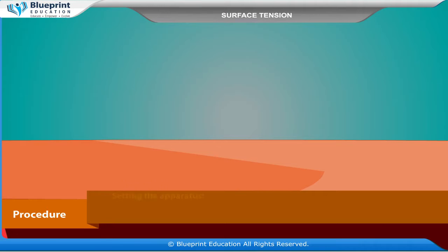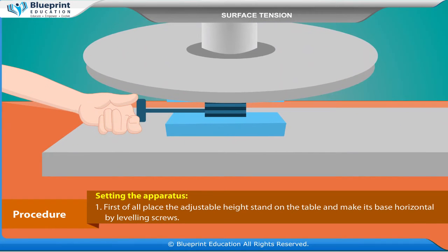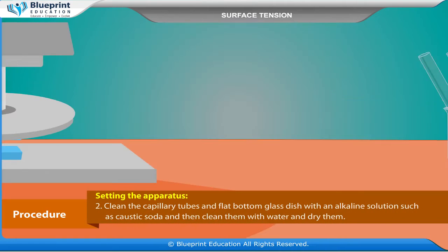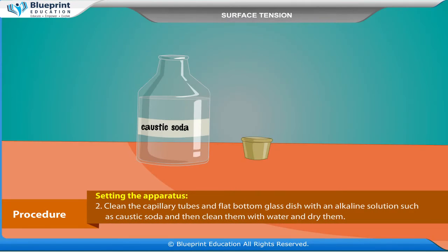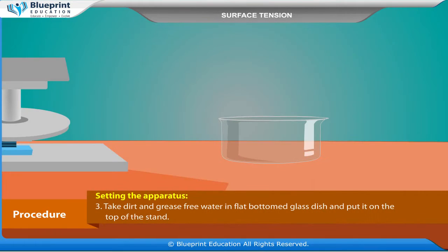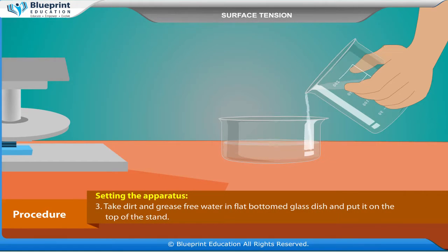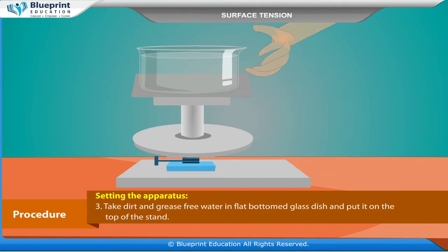Procedure – Setting the apparatus. First of all, place the adjustable height stand on the table and make its base horizontal by leveling screws. Clean the capillary tubes and flat bottom glass dish with an alkaline solution such as caustic soda, then clean them with water and dry them. Take dirt and grease free water in a flat bottomed glass dish and put it on the top of the stand.